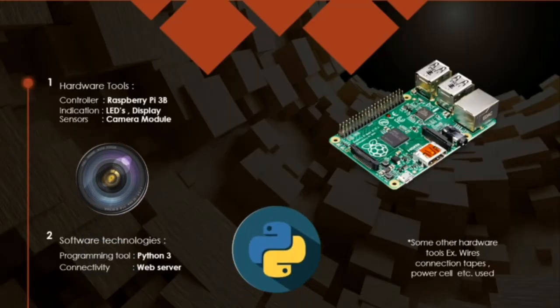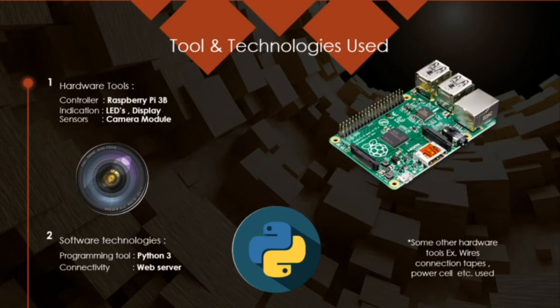Now let's talk about the tools and technologies we have used to implement this project. We have used Raspberry Pi 3 as the main processor. We have used LEDs as indicators to demonstrate red, green, and yellow lights. We have used the Pi Cam camera module to capture images. To program our Raspberry Pi we have used Python 3, and we have created a local web server to update information regarding the traffic control system.